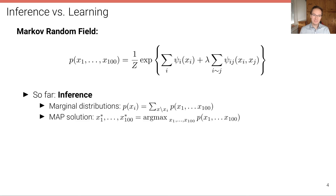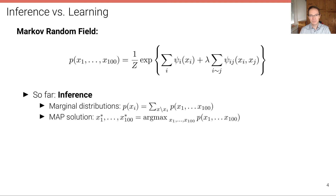What we discussed so far is inference in Markov random fields. We were interested in estimating marginal distributions — for example, the distribution p of x1 — or the maximum a posteriori solution, that is, given a particular model, what configuration of x1 to x100 maximizes the probability. Marginal distributions are often required when computing expectations, and the MAP solution is interesting when we want a point estimate of the best solution given the model.